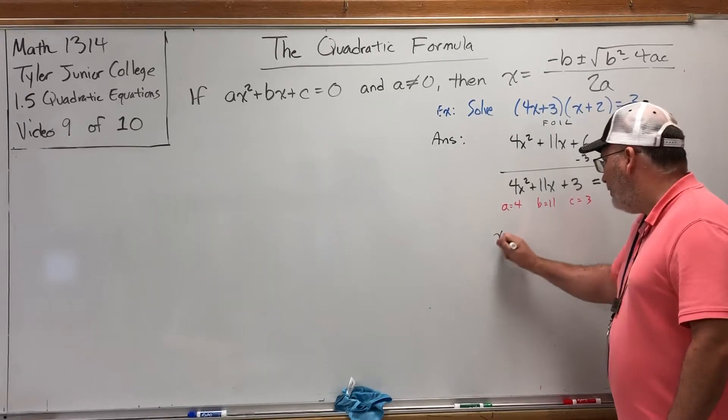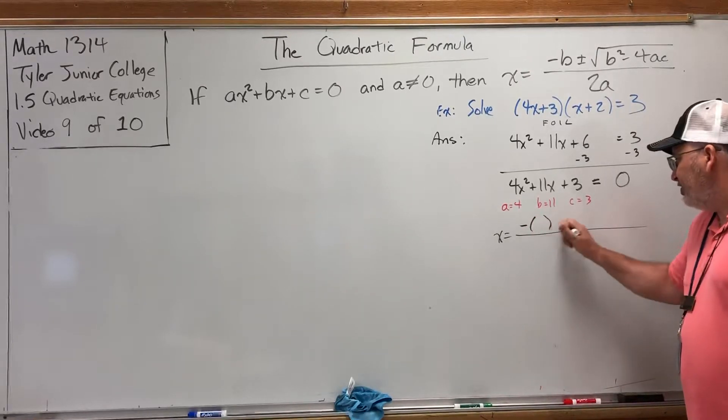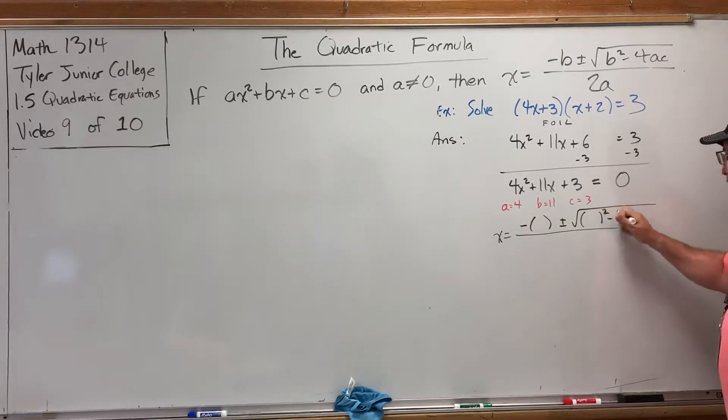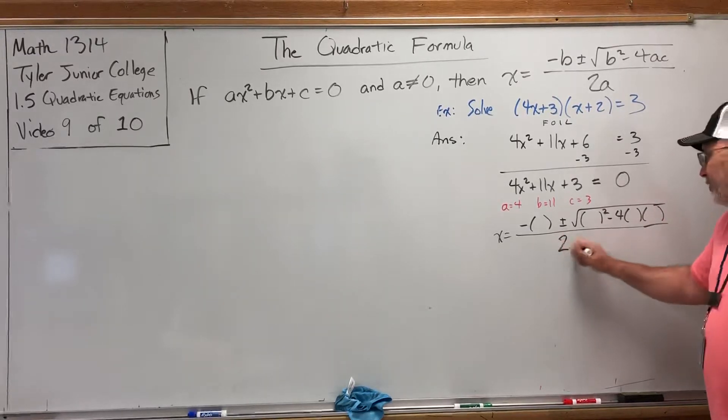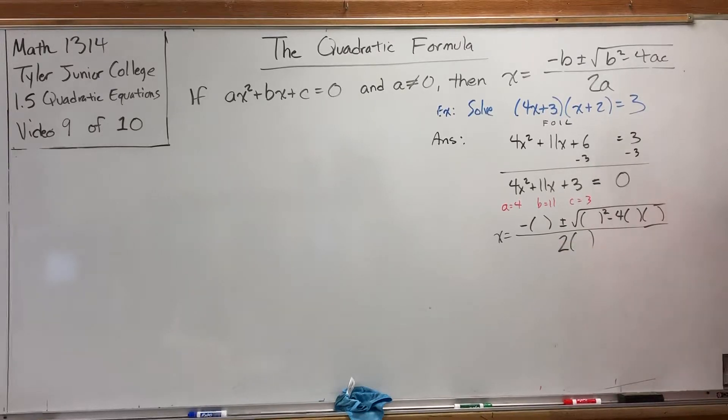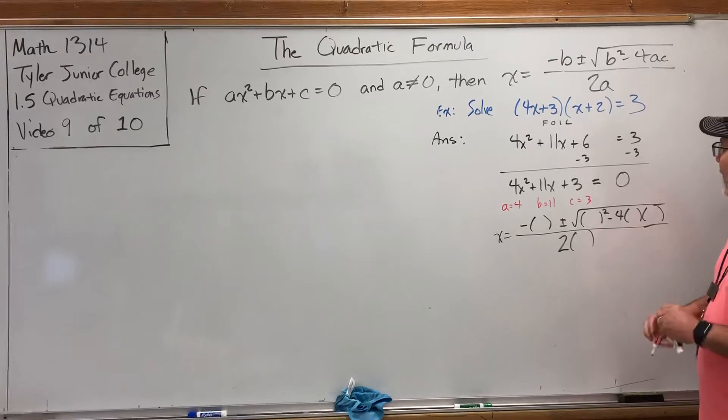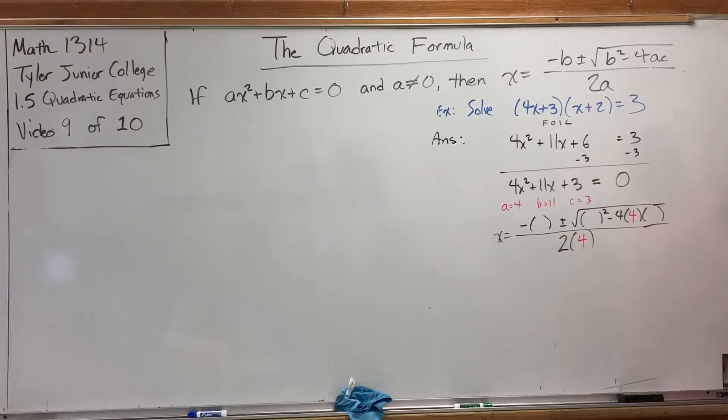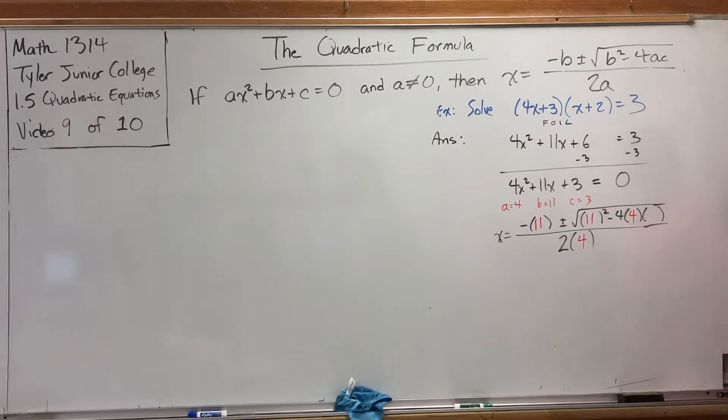When you set up the quadratic formula, you can write it with parentheses instead of letters. So negative parentheses, plus or minus the square root of parentheses squared minus 4 parentheses parentheses, and on the bottom, two parentheses. And then insert the values. The A is 4. The A goes after the 2 and after the 4. The B is 11. The B goes at the beginning of the fraction and the beginning of the square root. The C is 3. The C goes at the end of the square root.